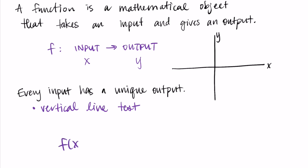When we talk about functions, we like to use function notation — that's just a way to indicate what the input is and what the output is. You'll often see people write f of x equals y. The whole point is to let you know that x is the input and y is the output. So f of something always means we're talking about an output value, which corresponds to a y value.